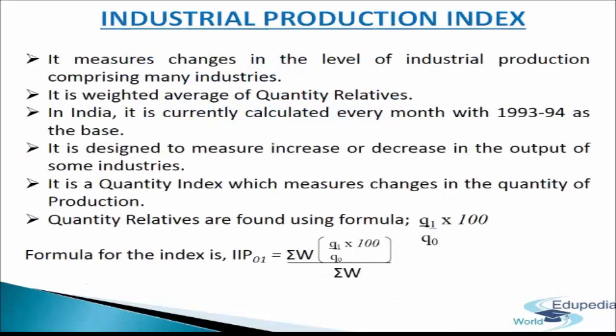Industrial Production Index. The index number of industrial production measures changes in the level of industrial production comprising many industries. It includes the production of the public and the private sector. It is a weighted average of quantity relatives. The formula for the index is: IIP₀₁ = (σW × (Q₁/Q₀ × 100)) / σW. In India it is currently calculated every month with 1993–94 as the base.